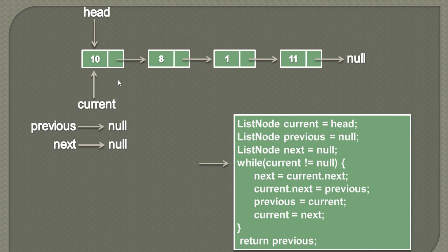The basic idea of the algorithm is to traverse each node one by one and apply some logic to reverse the position of the nodes. To traverse each node one by one, we'll apply a while loop with the condition that we iterate until current becomes null. Here current points to the first node and it's not null, so the while loop executes.